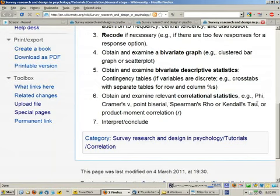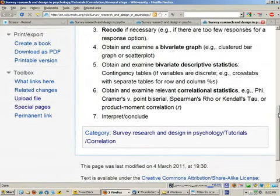Spearman's rho or Kendall's tau for ordinal by ordinal data, and probably most commonly, the Pearson product-moment correlation for interval-ratio by interval-ratio data.